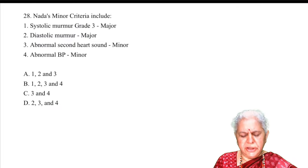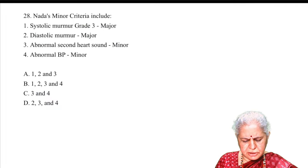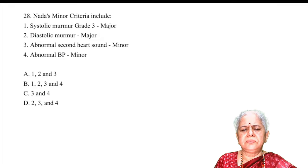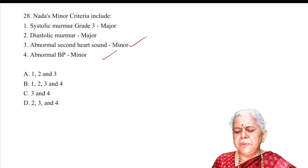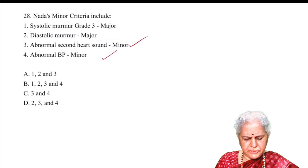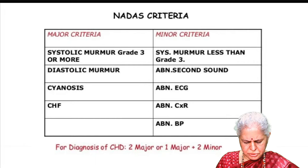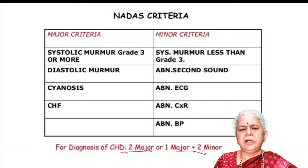NADA's criteria: systolic murmur grade 3 is a major criterion; diastolic murmur is a major criterion; abnormal second heart sound is a minor criterion; abnormal blood pressure is a minor criterion. To diagnose congenital heart disease using NADA's criteria, you need two major criteria, or one major and two minor criteria.